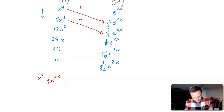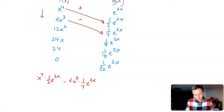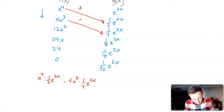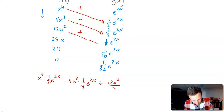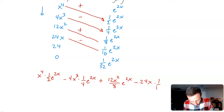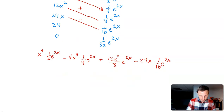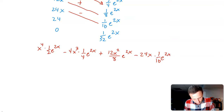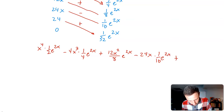The next term is minus 4x cubed times 1/4 e to the 2x. I see the simplifying that can be done — I'll do that after. Then plus 12x squared times 1/8 e to the 2x. Next is minus 24x times 1/16 e to the 2x. And the last term is plus 24 over 32 e to the 2x.